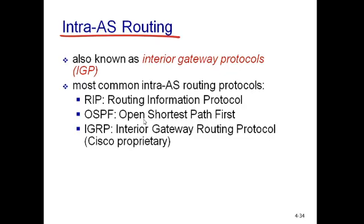The most common intra-autonomous-system routing protocols used on the internet are: RIP, which stands for Routing Information Protocol; OSPF, which stands for Open Shortest Path First; and IGRP, which is Interior Gateway Routing Protocol and is a proprietary Cisco protocol. We are going to learn about these protocols in our coming lectures. Thank you, see you in the next lecture.